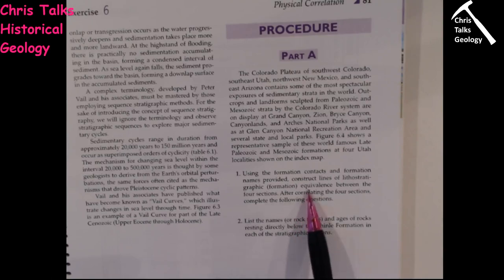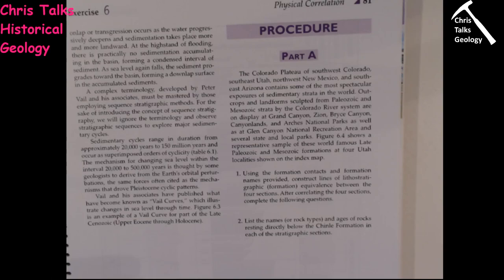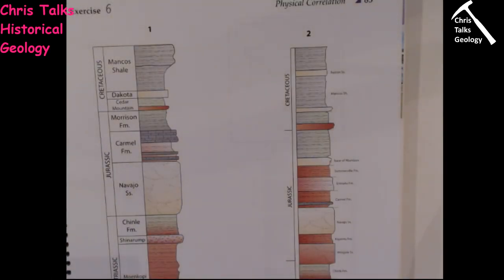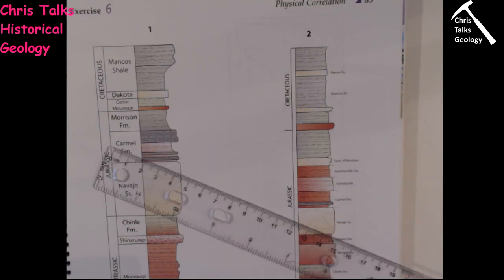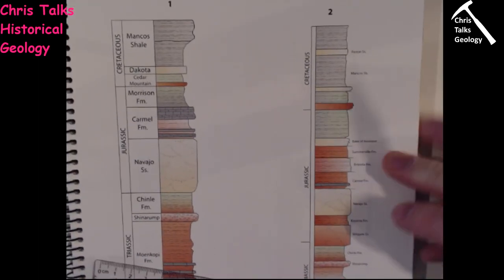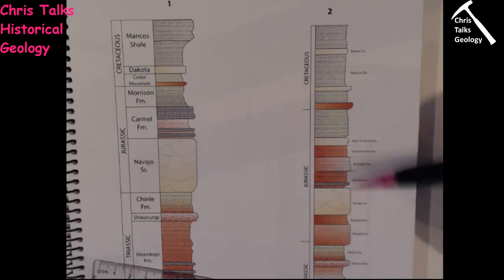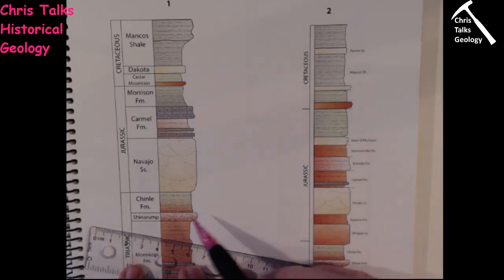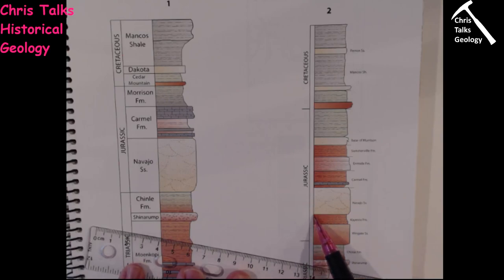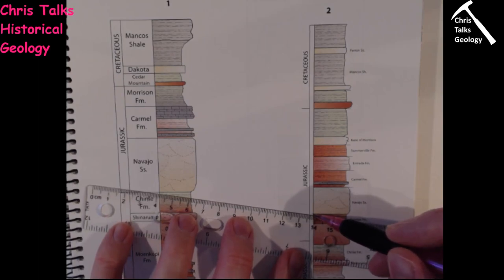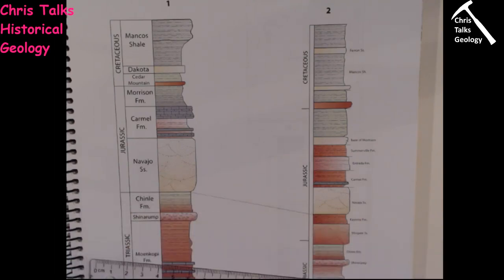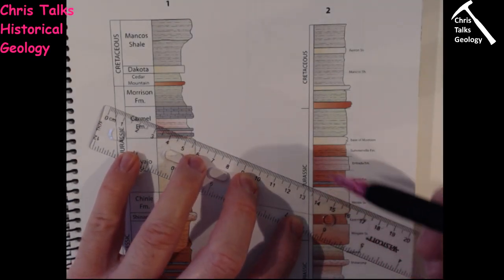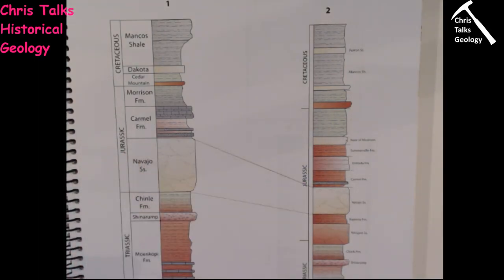First, we are going to construct lines of lithostratigraphic equivalence between the four sections — linking Section 1 to Section 2, Section 2 to Section 3, and Section 3 to Section 4. We'll need a ruler and a pencil. We have the same layers of rock, such as the Navajo Sandstone, occurring in adjacent columns. So here's the bottom of the Navajo Sandstone in one column, and here's the bottom in the next — we take our pencil and draw a line linking the two together.